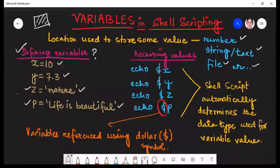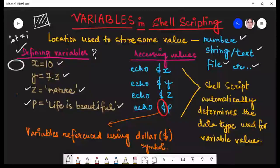So if you talk about other programming languages such as C, C++ and Java, there you need to define the data type. But in case of shell scripting, here also in Python also, we don't have to explicitly mention the data type of the variable. So shell script automatically determines the data type used for the variable value.